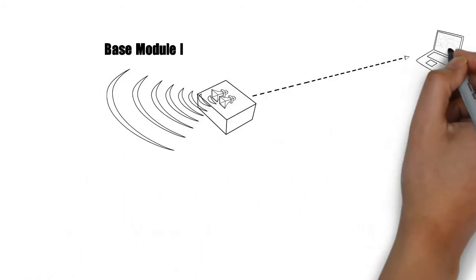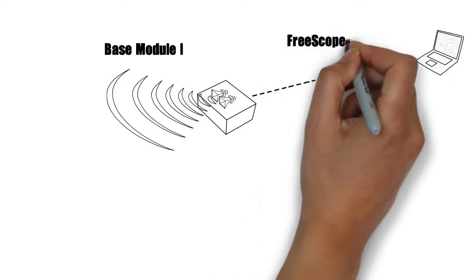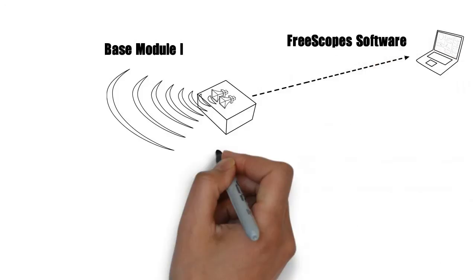Using a wireless LAN, students can access it and operate all possible scopes like an A-scope or a B-scope with the user-friendly FreeScope software.